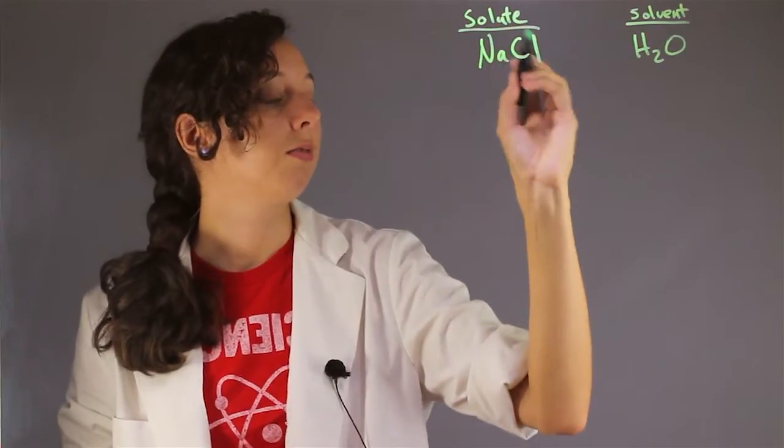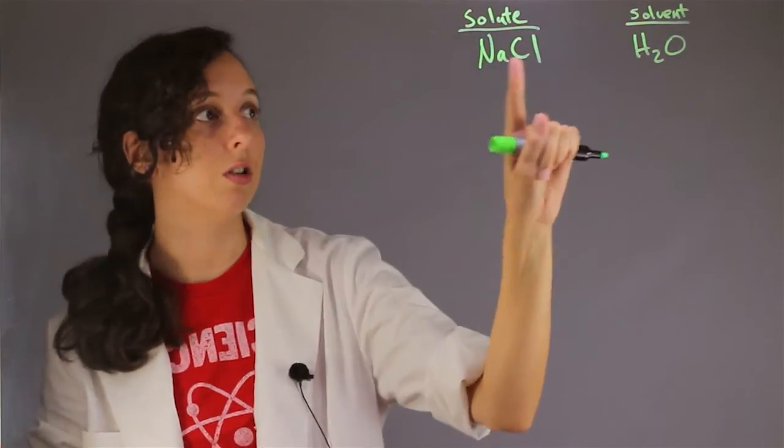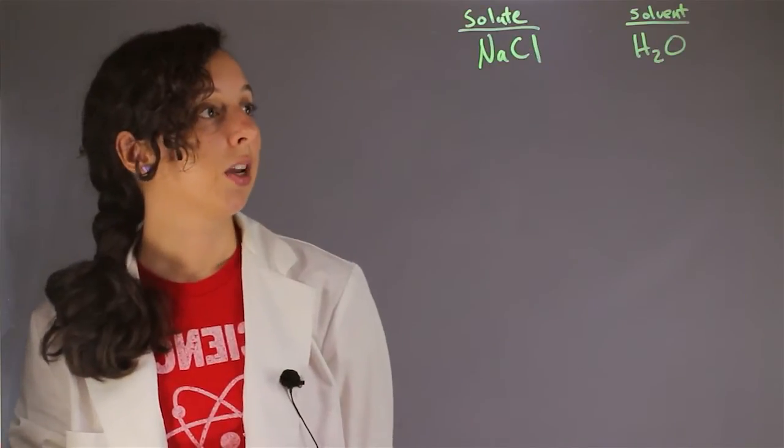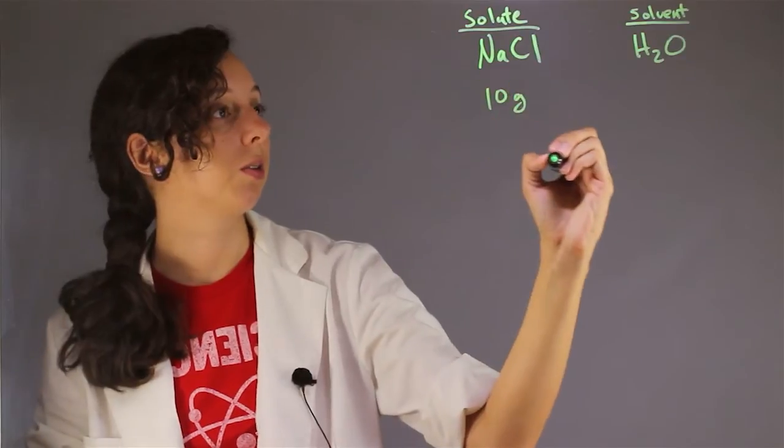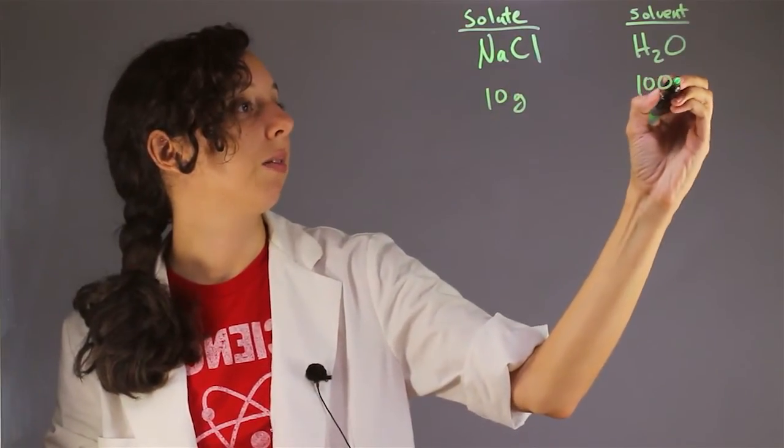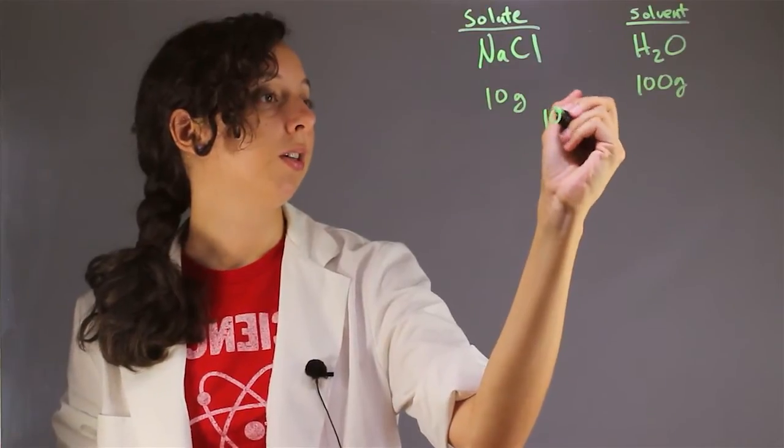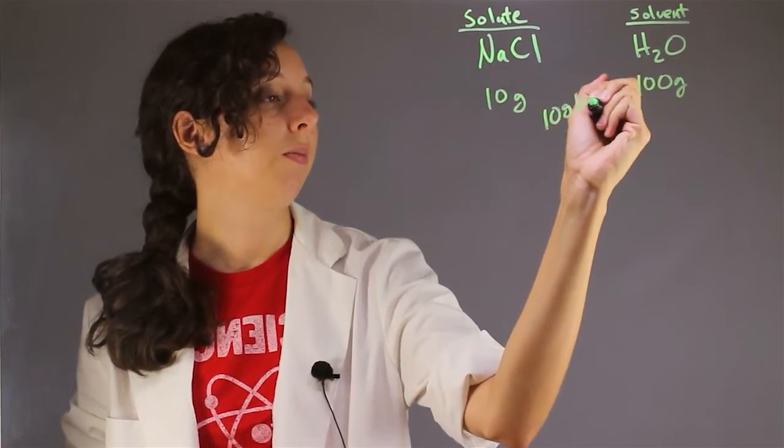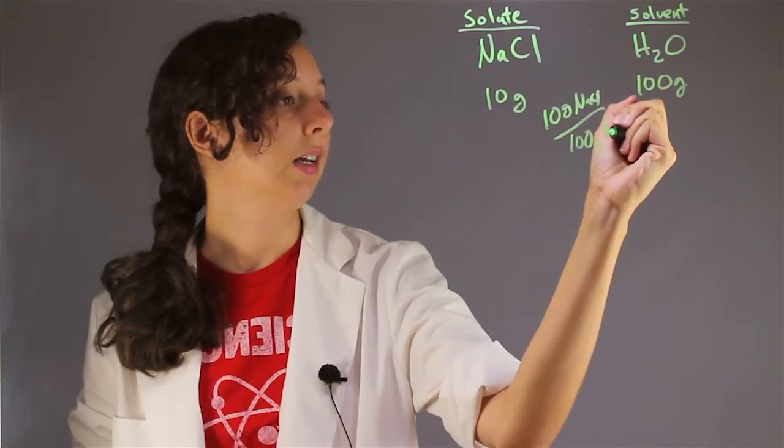Whatever we have more of, we put the solid in the liquid, that's usually how it works, solute and solvent. So our concentration, let's say that we had 10 grams of sodium chloride and 100 grams of H2O, then our concentration would simply be a ratio, so 10 grams sodium chloride over 100 grams H2O.